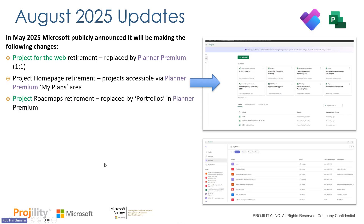The third change is the Project Roadmap. That area where you go and build a roadmap — a visualization of projects and tasks across different projects — is going away. It is being replaced by something called Portfolios, which is available today in Planner. You can go into Portfolios, tap into the projects you have in Planner, and put them in a visual timeline using Planner Premium Plans.